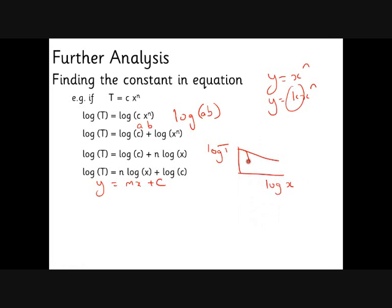If it for example looks like that, or even a straight line which I'm trying to draw, that would be the gradient. So the gradient will give us our value for n, and then the intercept here - the crucial bit here is that this intercept is log c. So the intercept equals log c, so c equals 10 to the power of the intercept.